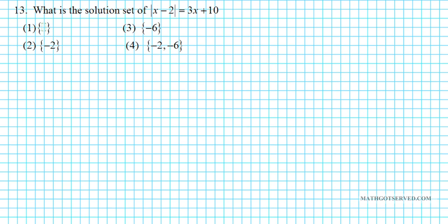Let's take a look at number 13. It says: what is the solution set of |x − 2| = 3x + 10? This is an absolute value equation. I'm going to solve it and check for extraneous solutions.